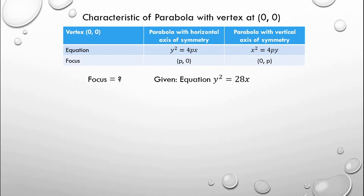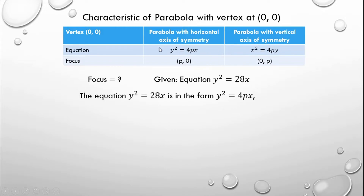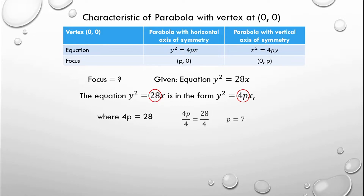The focus is unknown. The given equation is y squared is equal to 28x. This equation is in the form y squared is equal to 4px. So we use this formula since both have y squared. We can see that 4p equals 28, so we have 4p is equal to 28. To get the value of p, divide both sides by 4 — cancel the 4, and 28 divided by 4 is equal to 7.